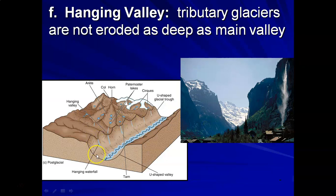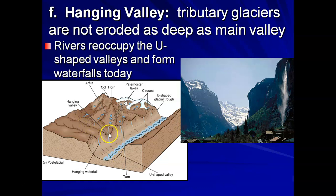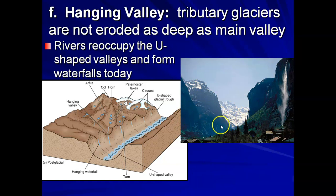Associated with U-shaped valleys are hanging valleys. This is when the tributary glaciers did not erode as deep as the main glaciers, because the tributary glaciers were feeding ice to the larger main glacier. We wind up with misfit rivers reoccupying these low spots. Where a tributary glacier didn't erode as deep as the main valley, the rivers — these misfit rivers — are left hanging. It's often the site of waterfalls today as tributary rivers flow off the cliff edge of the U-shaped valley. There are many fine examples in the Alps of Europe — here in Switzerland in a glacial trough there are massive waterfalls left hanging, maybe two or three in one picture.